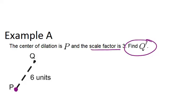So this little symbol right here, you read that as prime, and Q prime is the result after you have performed the dilation on Q. So Q, the original point, becomes Q prime in the dilation.